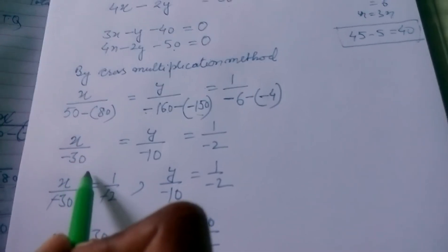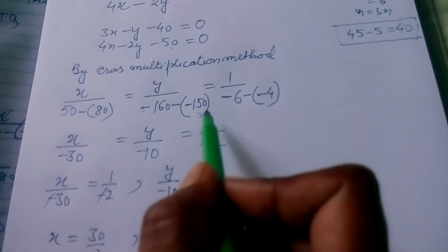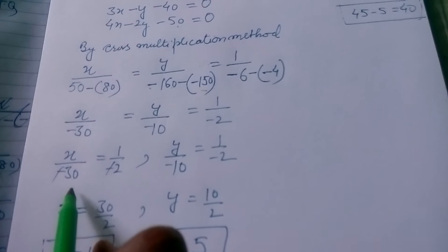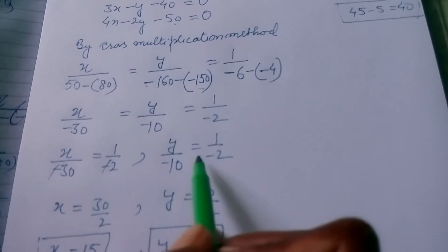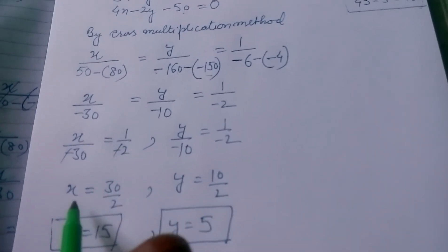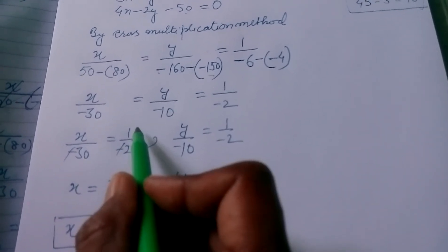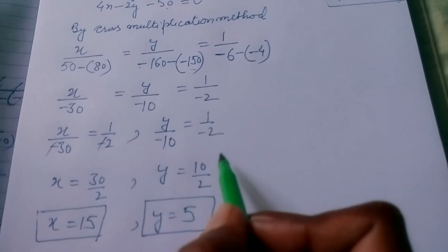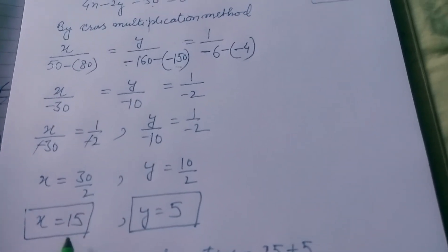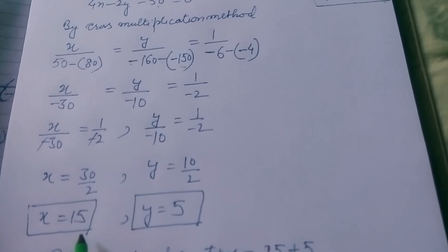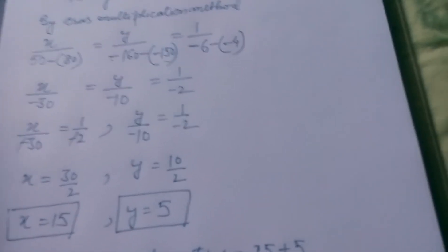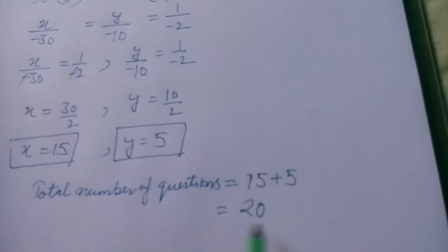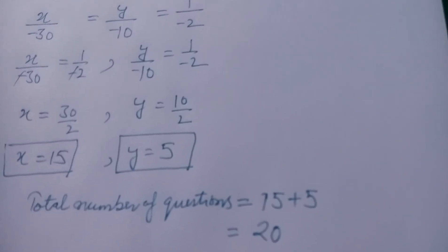So we get: X/(−30) = Y/(−10) = 1/(−2). Comparing with the constant term: X/(−30) = 1/(−2), so X = 30/2 = 15. And Y/(−10) = 1/(−2), so Y = 10/2 = 5. Therefore, the number of correct answers is 15 and the number of wrong answers is 5. The total number of questions is 15 + 5 = 20.